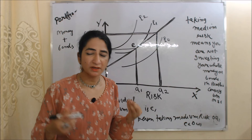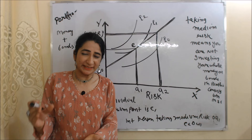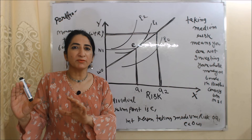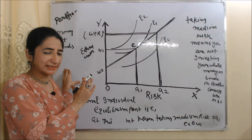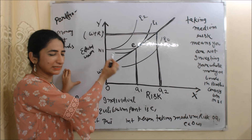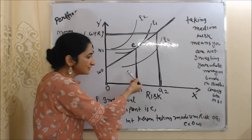As we earlier discussed, bonds are very risky. That's why Tobin says a rational individual does not invest their whole money in bonds — their portfolio consists of both money as well as bonds. In this diagram, on the x-axis we have risk and on the y-axis we have expected wealth. You can see that expected wealth and risk have a direct relation: as risk increases, expected wealth also increases.